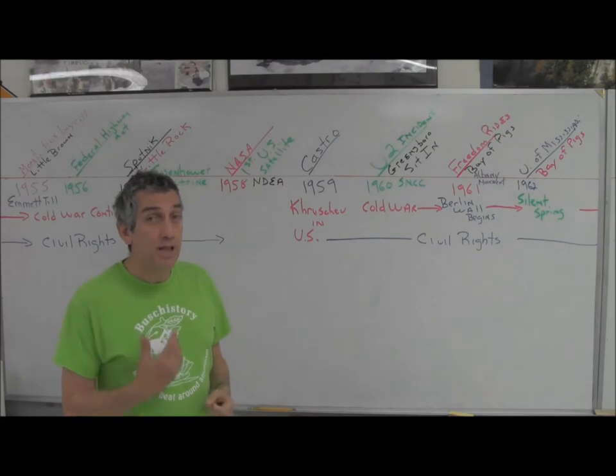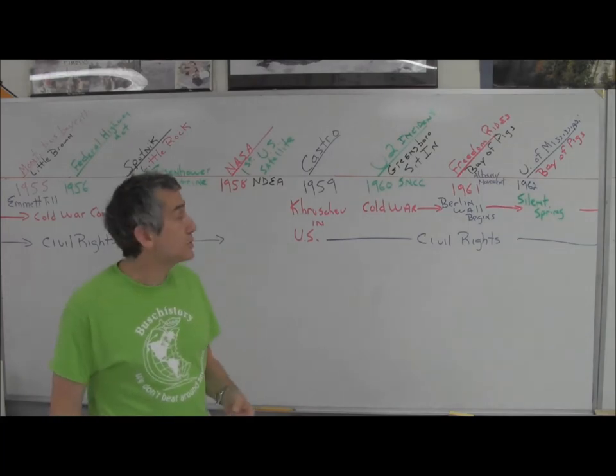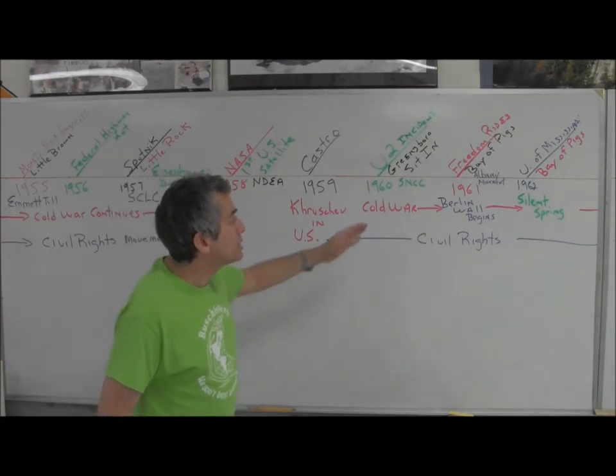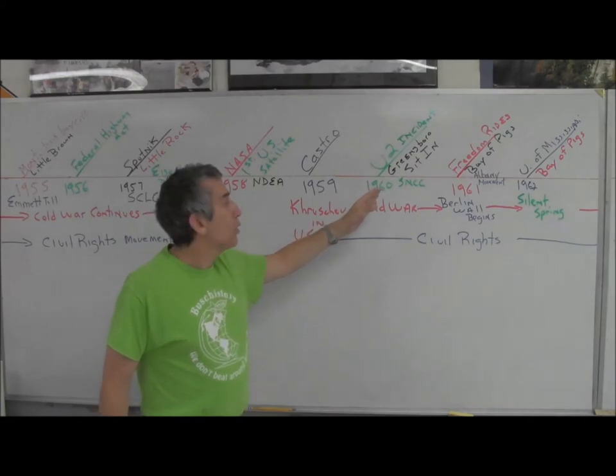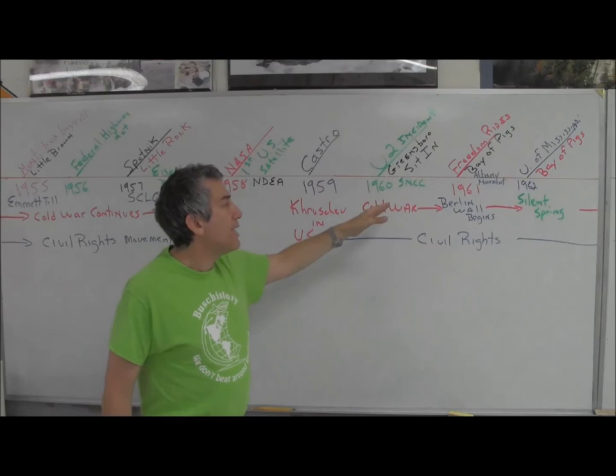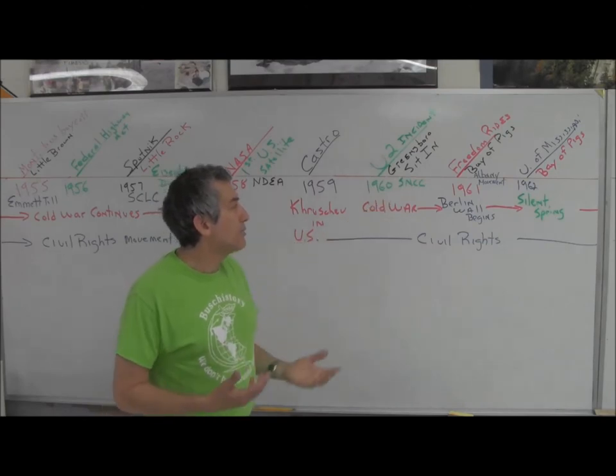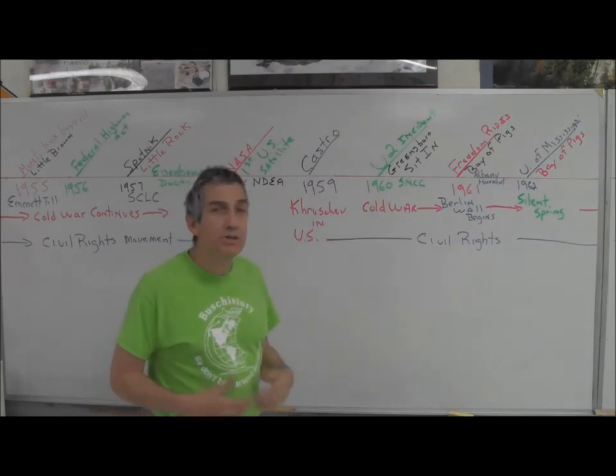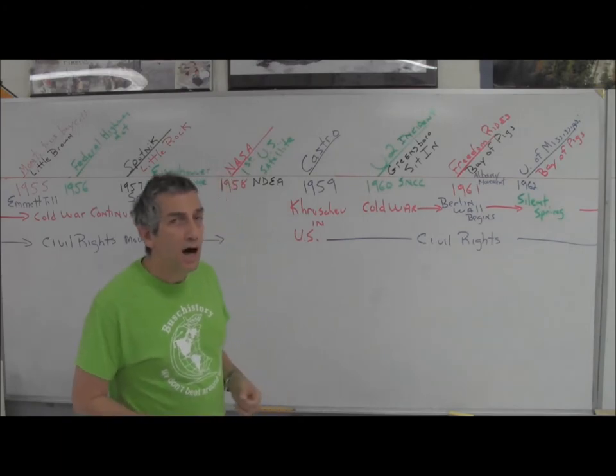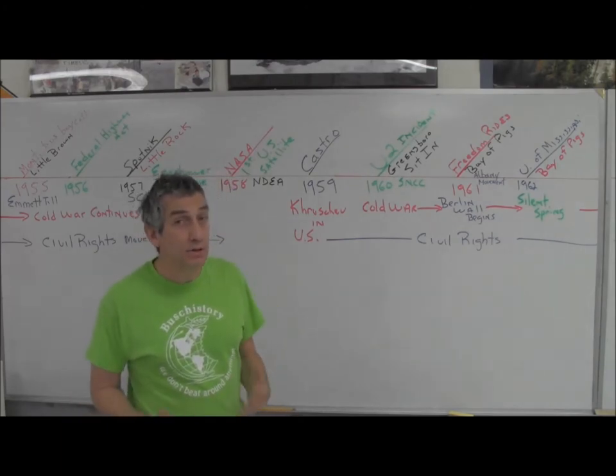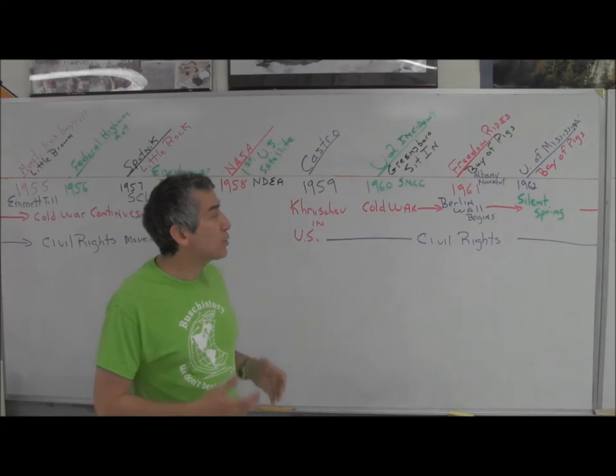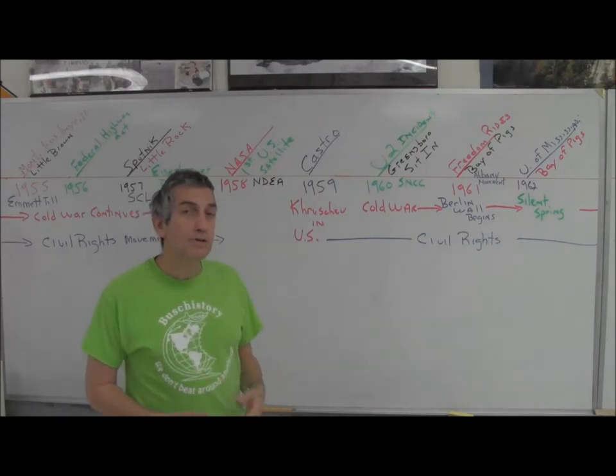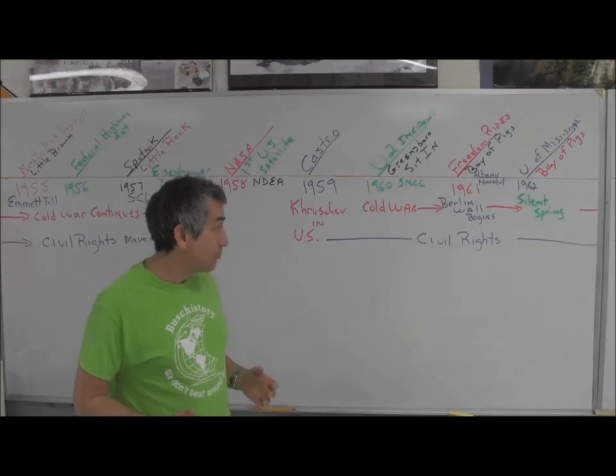Also in 1960, the civil rights movement is ongoing. We're going to get the Greensboro sit-in at Woolworth's in Greensboro, North Carolina. That's going to be part of SNCC, the Student Nonviolent Coordinating Committee, an offshoot of the SCLC. This is a group of students trying to use civil disobedience to fight segregation.